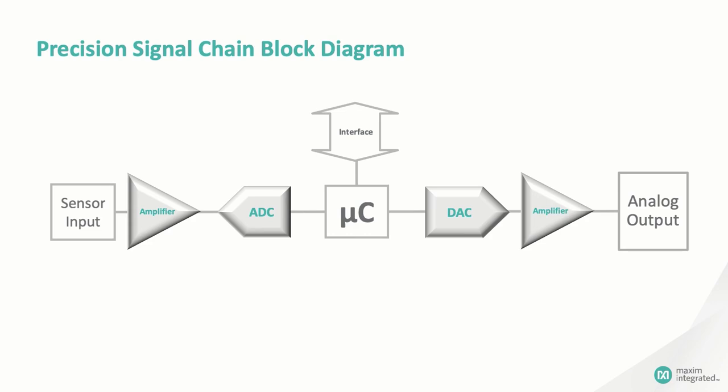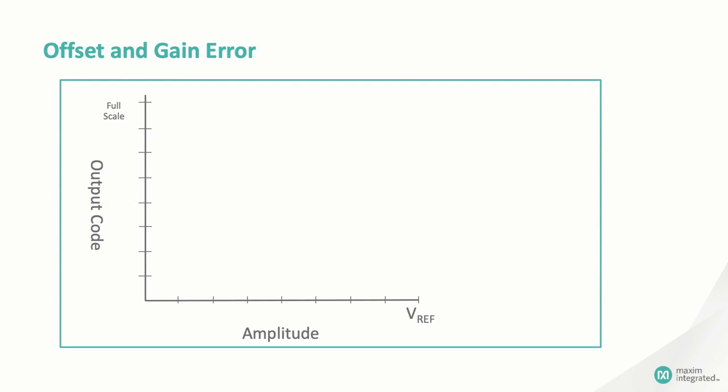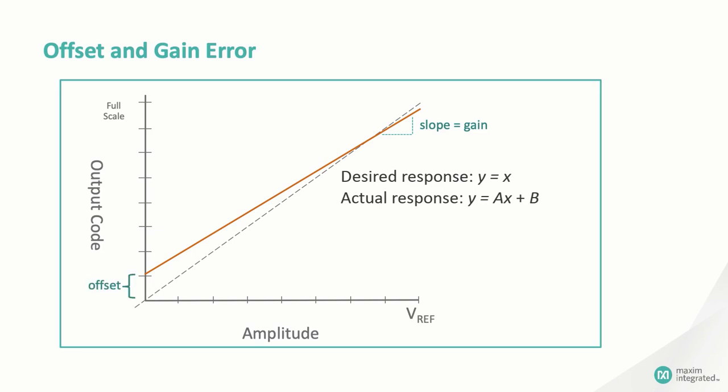That's not all. Don't forget that every data converter requires a reference, and those references just aren't perfect. They have a temperature coefficient and may themselves have an offset error. Here's the bottom line: what should be a perfectly linear y equals x relationship between the input of the signal chain to its output may well contain artifacts that contribute to an offset and a slope error, so that y equals ax plus b, where a is some non-unity slope and b is some non-zero offset.